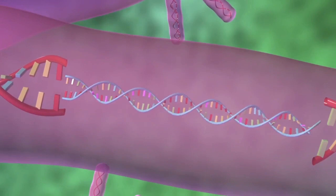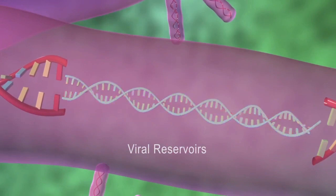HIV infection can not only lead to the production of viral particles, but beginning very early in an infection, HIV can establish what are referred to as viral reservoirs. Viral reservoirs are cells which harbor the HIV virus but do not actively express viral particles. The formation of reservoirs is believed to be one of the major barriers to eradication, as the virus in reservoirs is not replicating and therefore refractory to therapeutics that target viral production.